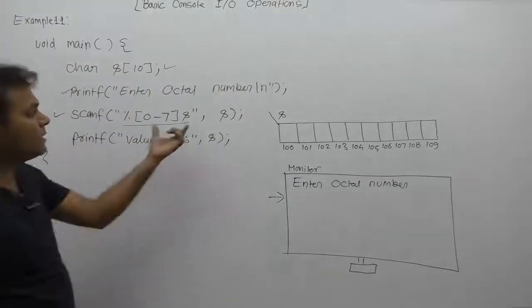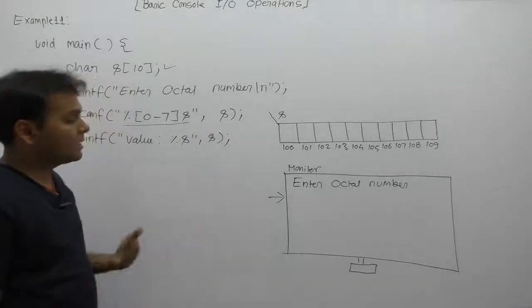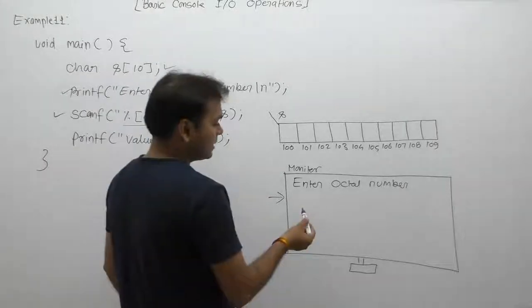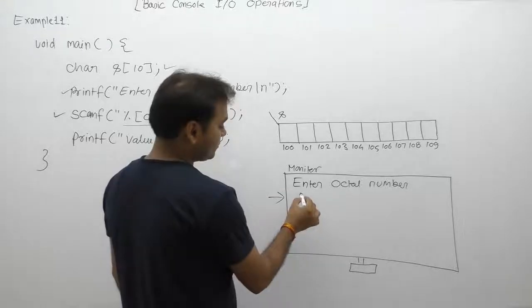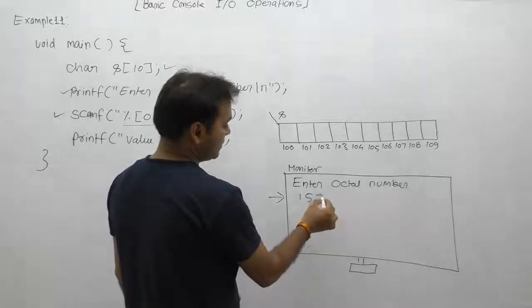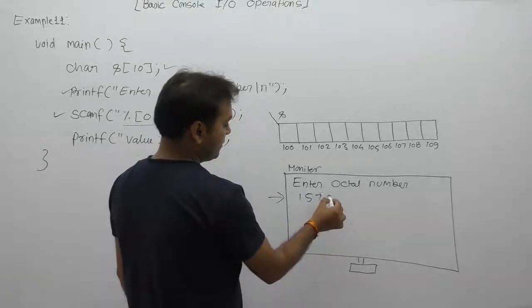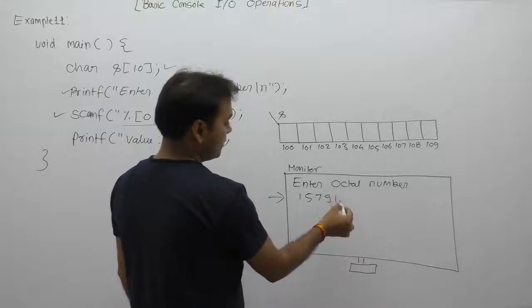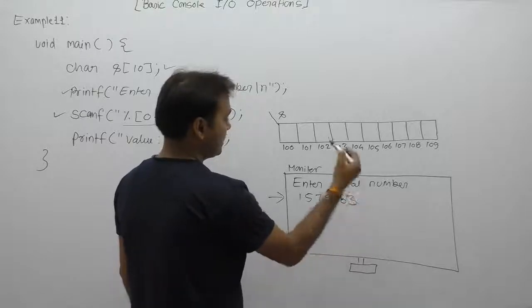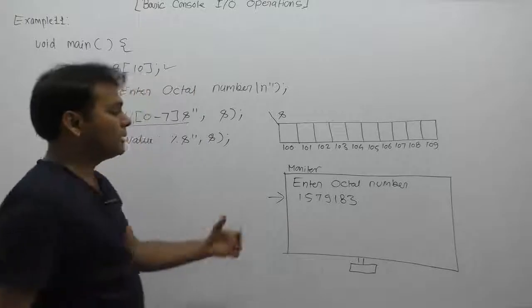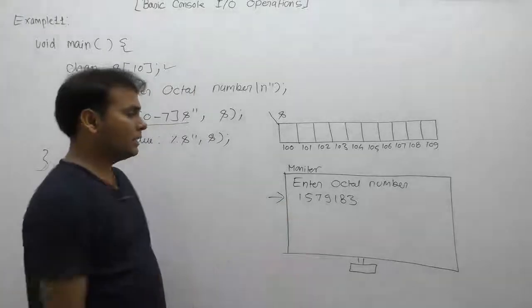Next, scanf function through runtime will read the string. Suppose that we are entering some string as 1, 5, 7, 9, 1, 8, 3 like that. When this data is pressed from keyboard, then this data gets stored inside standard input buffer, stdin.